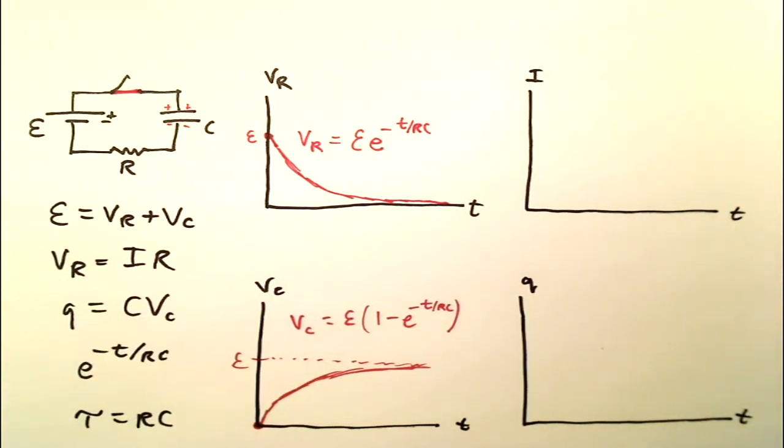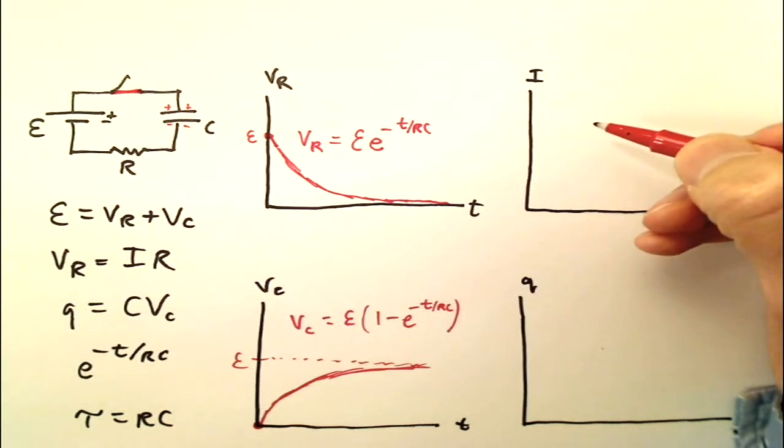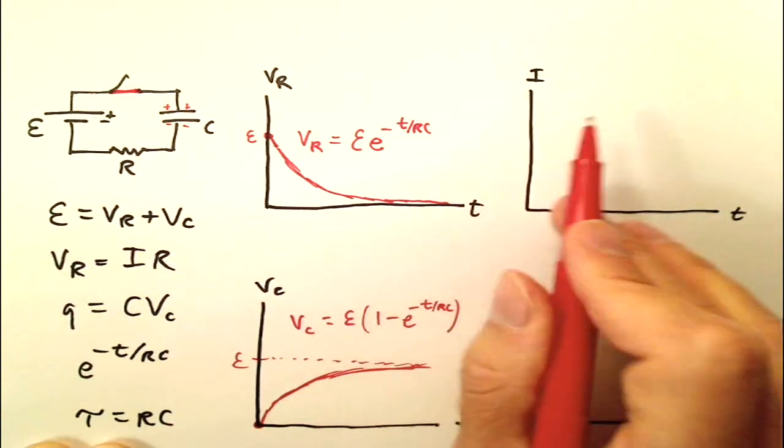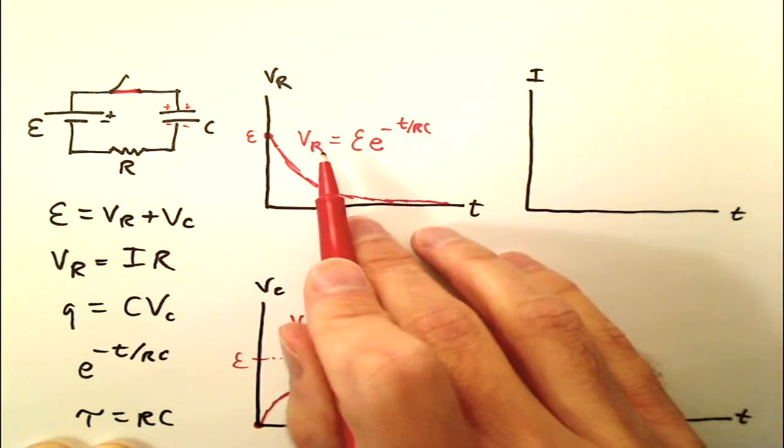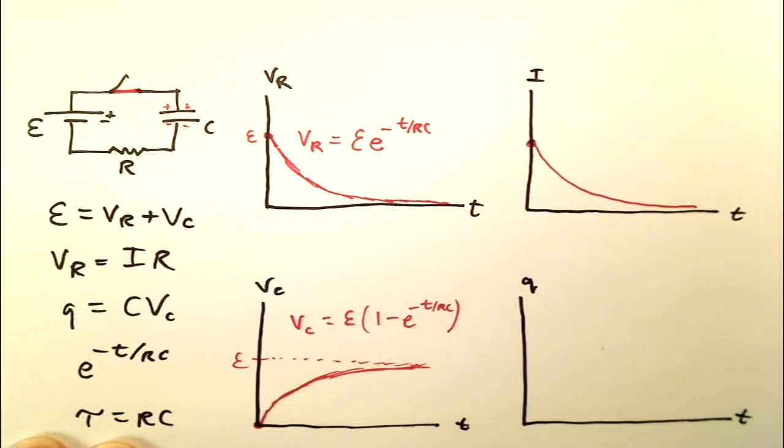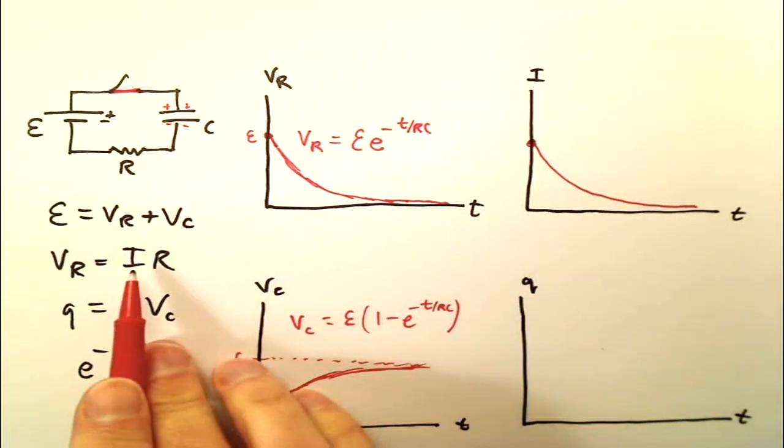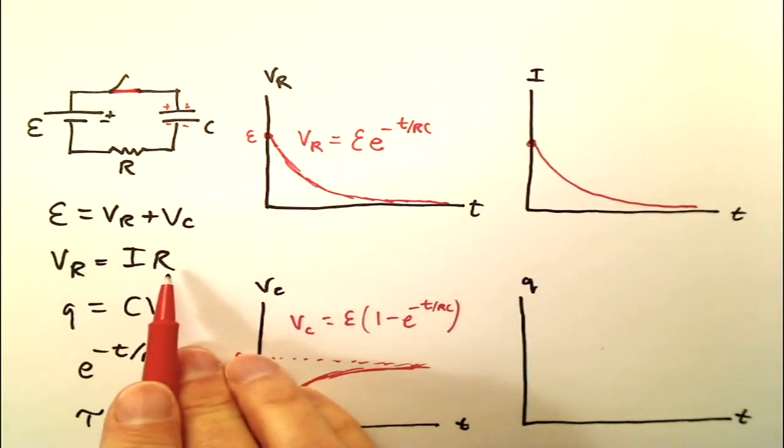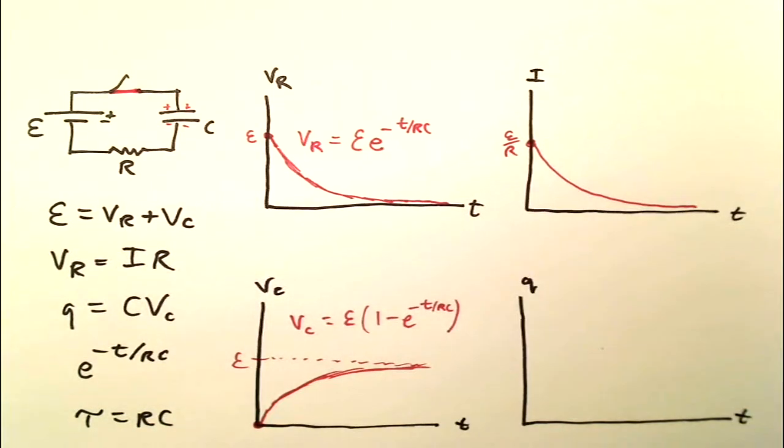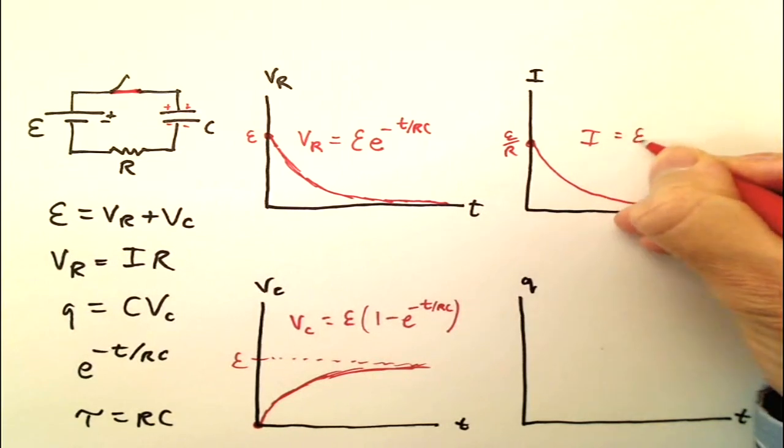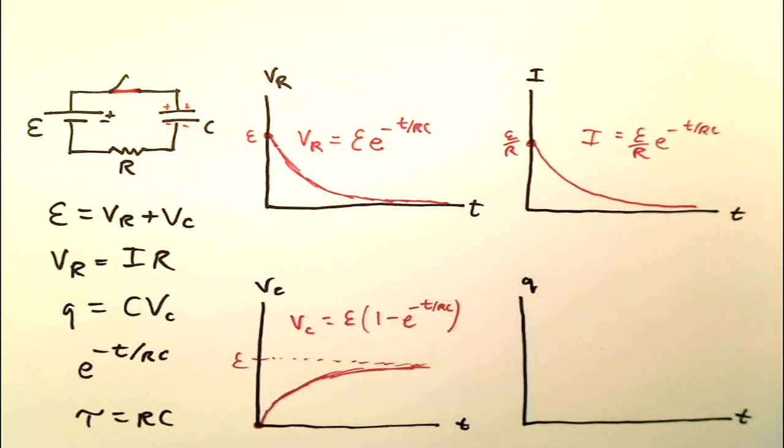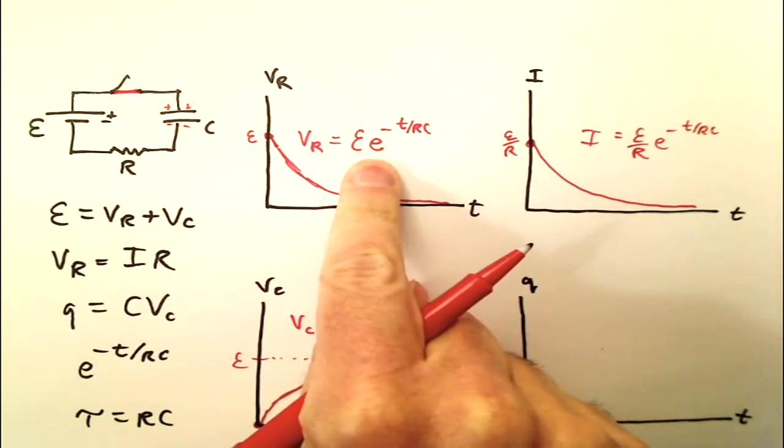Now the hard part is over. I is easy because I is proportional to VR. So I is going to look very much like VR. It's going to start out at some value. It's going to drop off to zero asymptotically. What's the initial value? Well, you get the current by taking the voltage dividing by the resistance. There's the initial voltage, so we'll divide that by the resistance, and there it is. E over R is the initial value. So the current is simply E over R times E to the negative T over RC. It's just like this, except you divide by R.